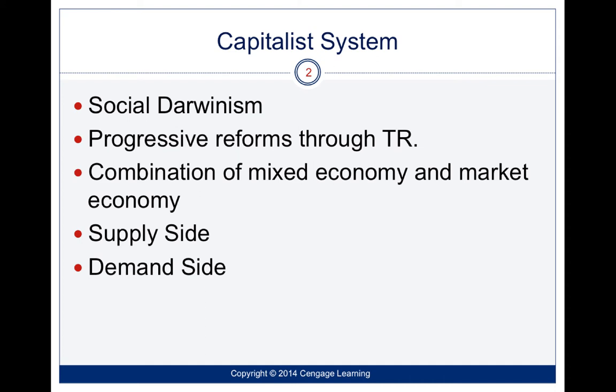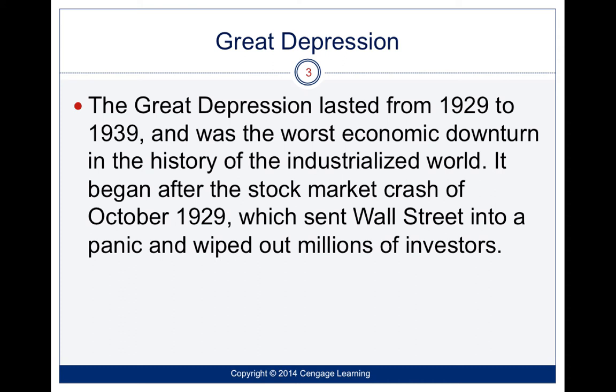We saw those progressive reforms through Teddy Roosevelt. Here in the United States, we have a combination of a mixed economy and a market economy. You could do supply-side economics or demand-side economics. Supply-side is that trickle-down theory, popular with Reagan, with W, and now with Trump. The Depression ran from 1929 to 1939 and it was the worst economic downturn in the history of our industrialized world, beginning when the stock market crashed in 1929, which sent Wall Street into a panic and wiped out millions of investments.